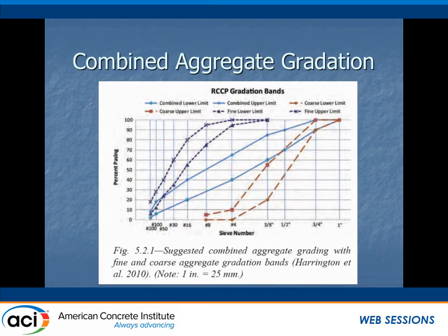State DOTs have tended not to look at RCC very deeply, and in many states, that's who funds the materials research. As a result, the research base in roller-compacted concrete, the way I figure it, is about one PhD every ten years — about three over 30 years. For the combined aggregate gradation, it's really trying to develop an asphalt-type gradation and minimize the use of paste.